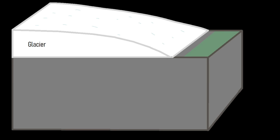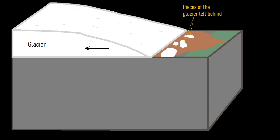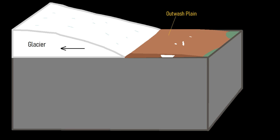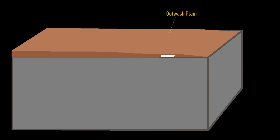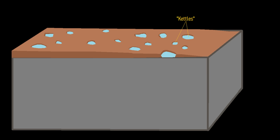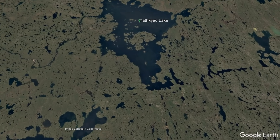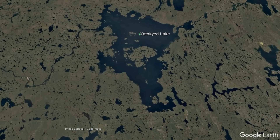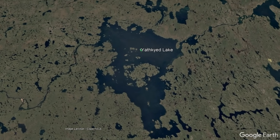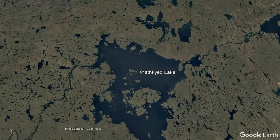Third, chunks of ice between the size of a small boulder and 8 kilometers wide, breaking off and being buried by sediment, eventually melting to form what is known as a kettle lake. All three of these lake types can be found in the vicinity of Yathkyed Lake.